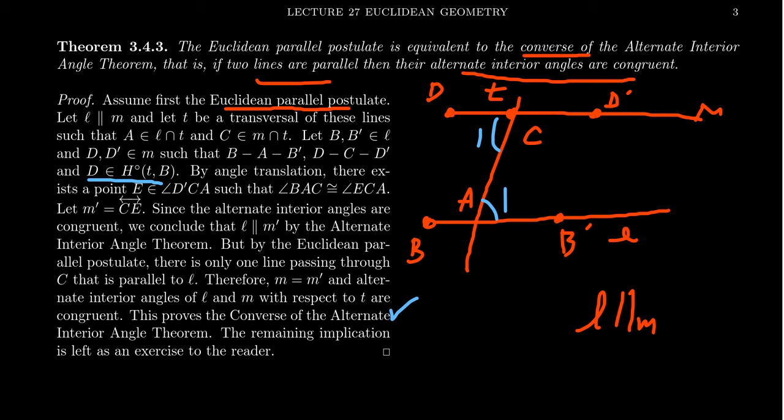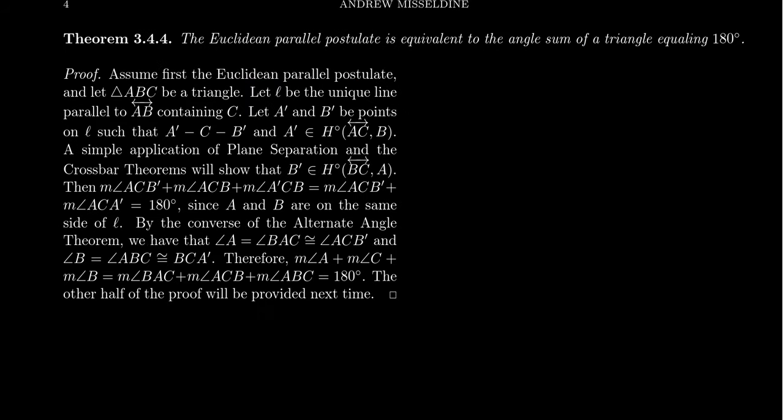We still need to prove the other direction — that assuming the converse of the alternate interior angle theorem implies the Euclidean parallel postulate — but I'll leave that as a homework question for students and viewers. It can be proven by a similar type of argument.